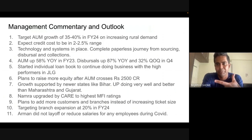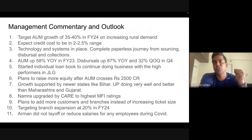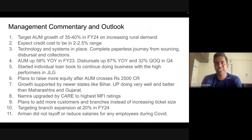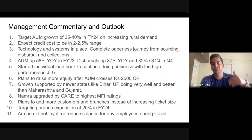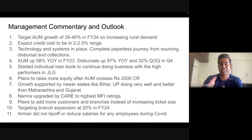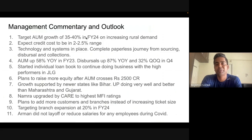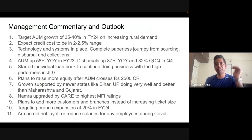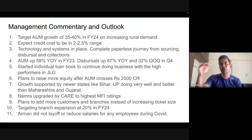Now we need to look at management outlook — because the market always looks forward, not back. This is where people make mistakes using only screeners, which won't give you the outlook. The management is targeting AUM growth of 35 to 40 percent in FY24. In FY23 they already had operating leverage. So if AUM can grow 40 percent with operating leverage, PAT growth could be 50 to 70 percent. That's why Arman stock is at an all-time high — the market also understands this.